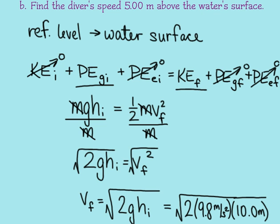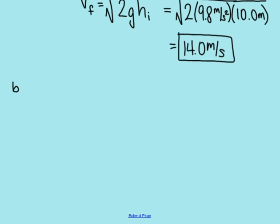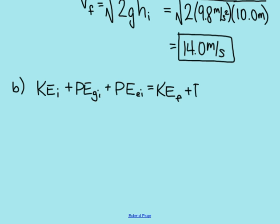Let's now look at part B. Part B says find the diver's speed 5 meters above the water's surface. The way part B is different is that we have a different final point. We'll stick with the initial point of where he drops from the diving board, but the final point is going to be different, which will change our conservation of energy equation. For part B, I'll start with KE initial plus initial gravitational potential energy plus initial elastic potential energy, equals final kinetic energy plus final gravitational potential energy plus final elastic potential energy.